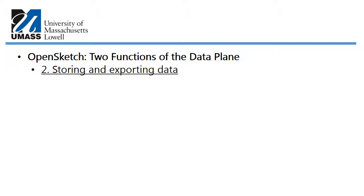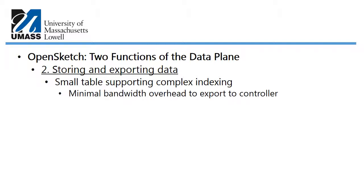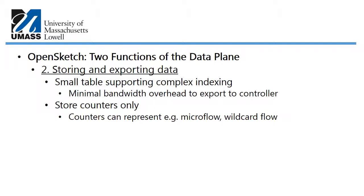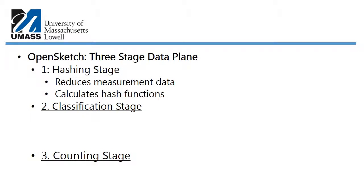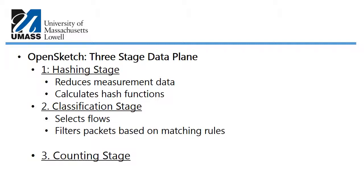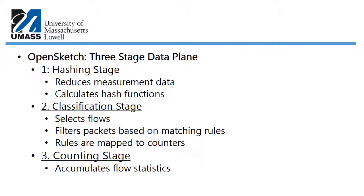The second data plane function is storing and exporting data. OpenSketch uses a small table supporting complex indexing, which requires minimal bandwidth overhead to export data to the controller. Only counters are stored, and those counters can represent a microflow or a wildcard flow. OpenSketch has a three-stage data plane: the hashing stage reduces measurement data by pre-screening and computing hash functions; the classification stage selects flows of interest by filtering packets on matching rules and mapping them to counters; and the counting stage accumulates flow statistics.